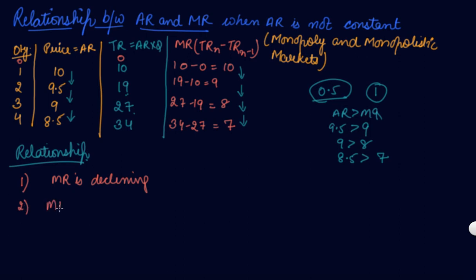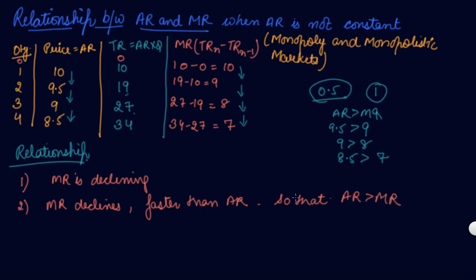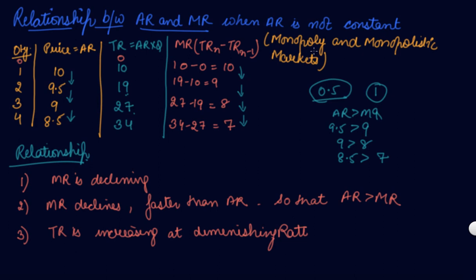So these are the three relationships when your AR is not constant. Number one: MR is declining. Number two: your MR declines faster than AR — AR reduces at 0.5 but MR reduces by 1 — which means AR is greater than MR. Number three: TR is increasing at a diminishing rate. I hope you liked the video. Please download our Scholars Learning app and enjoy the learning experience.